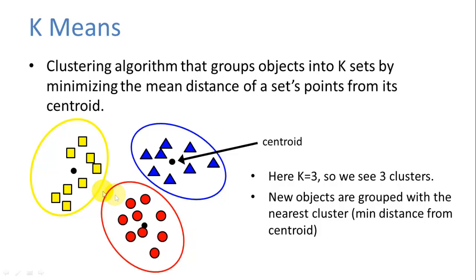So here we have three sets. And we've grouped the objects closest to each centroid. And we're trying to minimize the average distance of a set's point from its centroid. So in this case, let's say this yellow square, we wouldn't want it to be in the blue set because it's much farther from this centroid. And it's also very far from the red centroid. But it's pretty close to the yellow centroid. So we think this yellow one probably belongs with this yellow set.